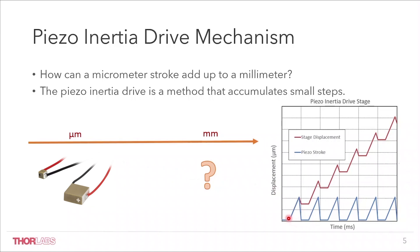A piezo chip only generates a small step of several micrometers at a time. We can use a mechanism to accumulate these small steps from cycle to cycle, as shown in the plot on the right.